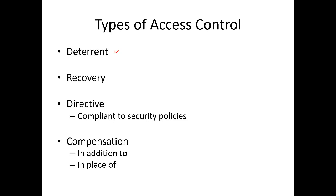A good example of deterrent access control is a firewall, because it prevents a bad packet from getting into your network and causing any damage. A good example of recovery-related access control is a way to back up data and restore it after an incident — similar to corrective, but more specialized in getting back to normal.